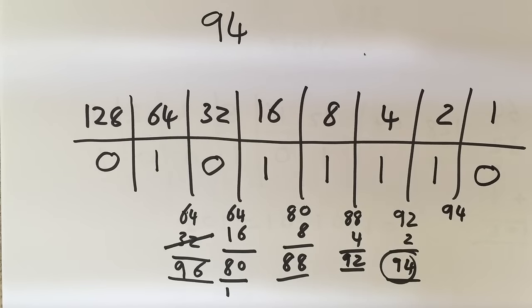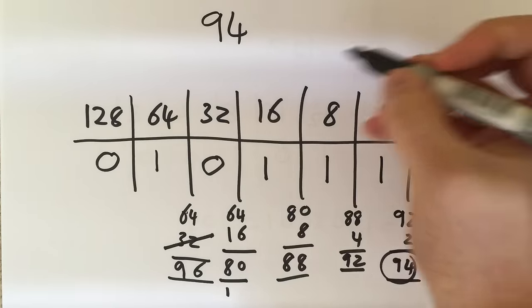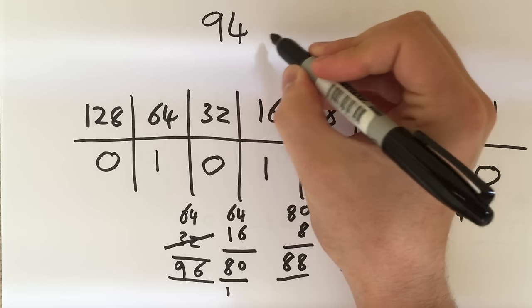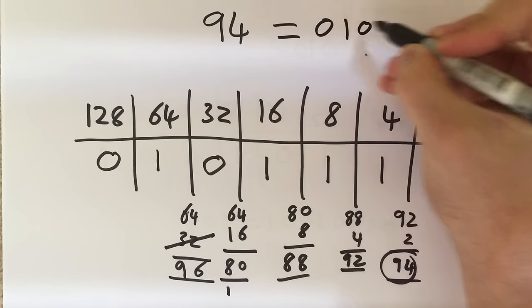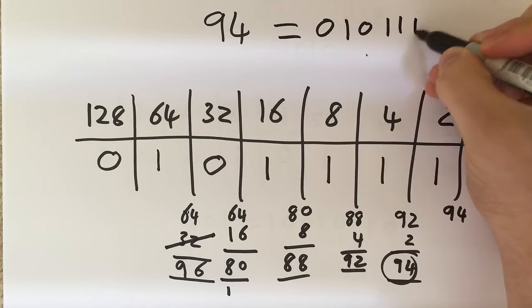What this has told me is that if I want, I could say that the number 94 in denary is equal to 0, 1, 0, 1, 1, 1, 1, 0 in binary.